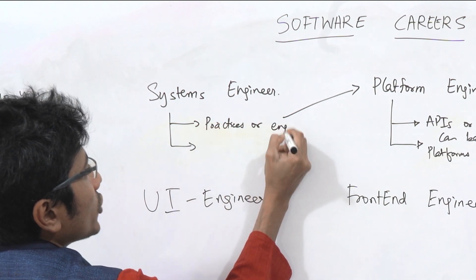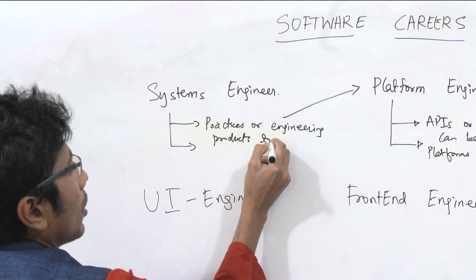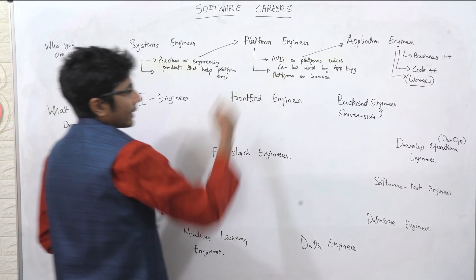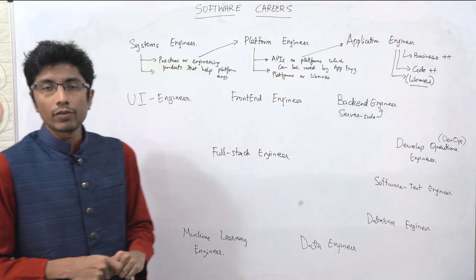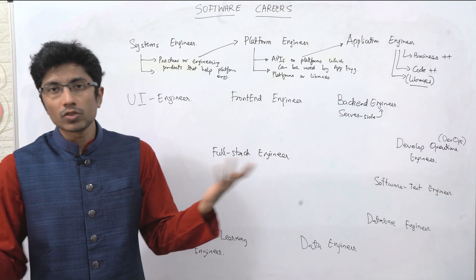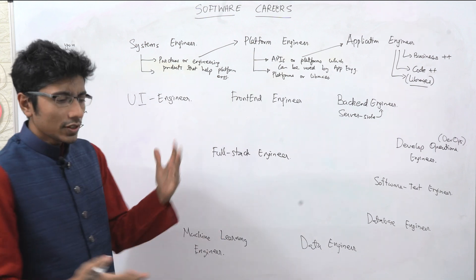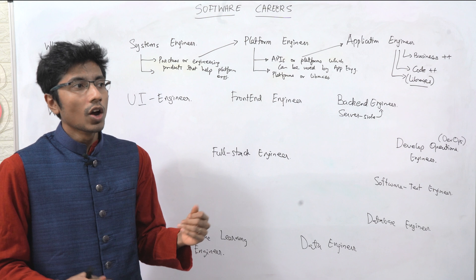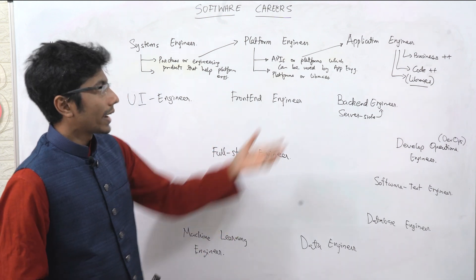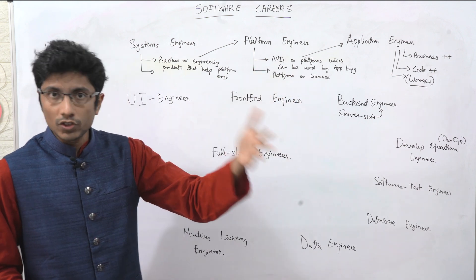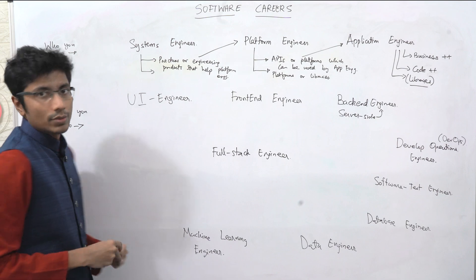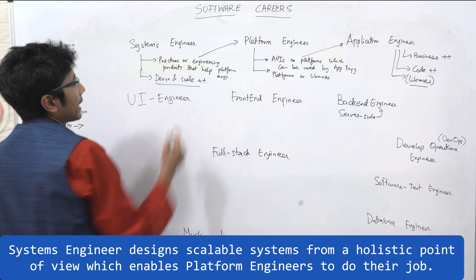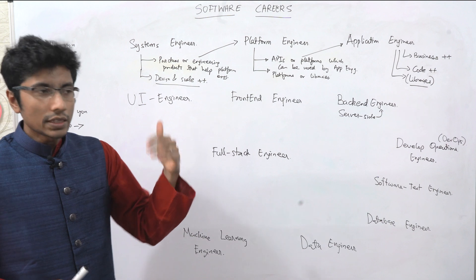What they build is practices or engineering products that help other engineers, especially platform engineers. A lot of the platform engineers complain that I need consistent hashing or I'm not finding anything good out there in the market to use, so I just can't write a platform without a database or very critical tool. That will be handled by a systems engineer, so their standard of design and scale is usually much higher than anyone else in the overall organization. These folks are usually senior engineers.